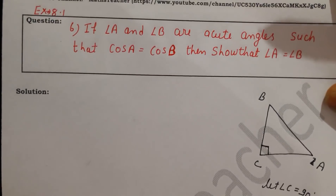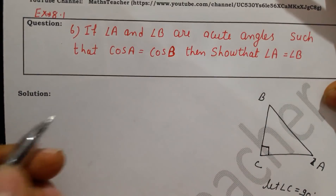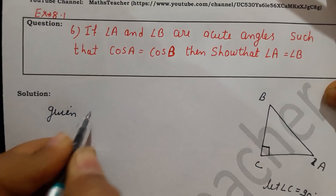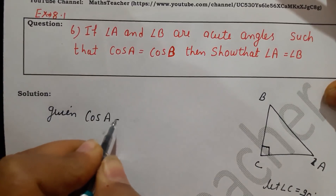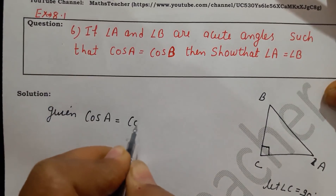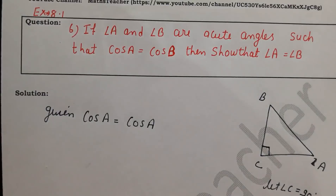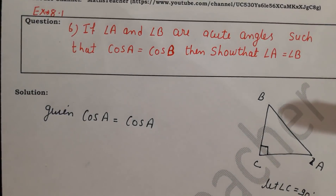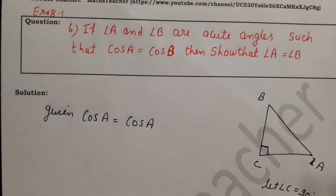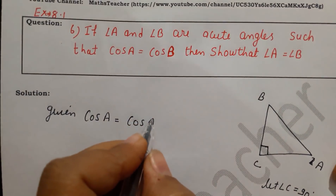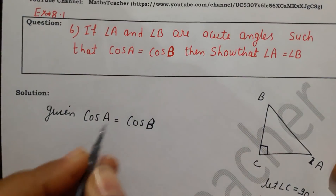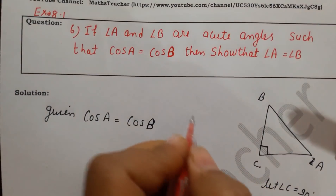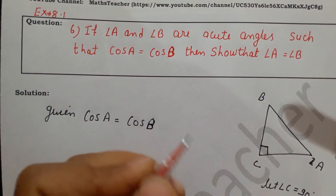Now let's start the question. Given: cos A equals cos B. We have no specific value given here, just this equality. So what do we do? We write cos A and cos B in terms of the sides of the triangle.